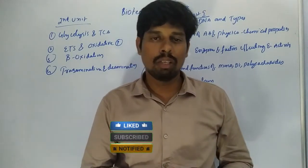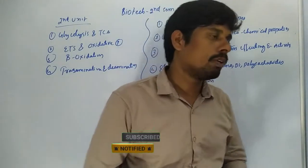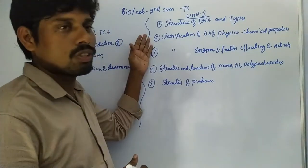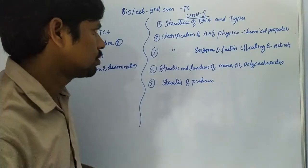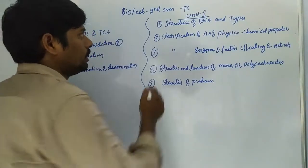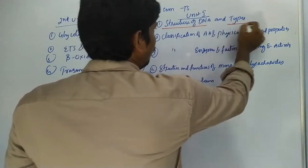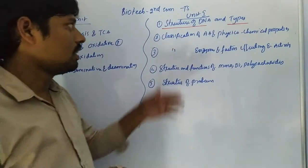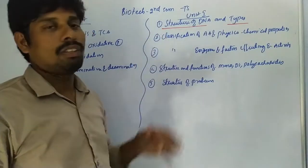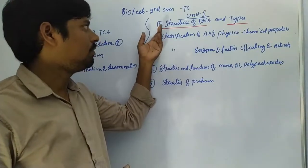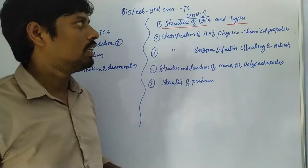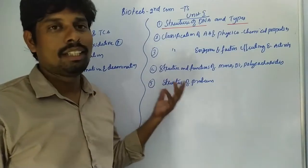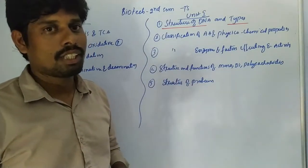In the first unit, we have four units. In the first unit, the important question is the structure of DNA and types of DNA. The types of DNA are the differences.